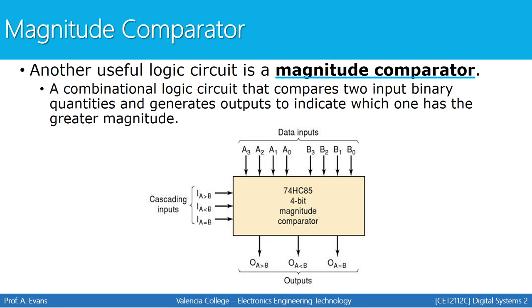A useful logic device to be aware of is called a magnitude comparator. On the screen you can see a block diagram of the 74HC85, a 4-bit magnitude comparator. Its basic function is to compare two binary quantities and generate an output to indicate which has the greater magnitude. There are three outputs, and one will be high depending on whether input A was greater than B, less than B, or equal to B. It also comes with three cascading inputs used to compare 8-bit or 12-bit numbers.